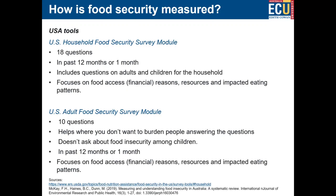It mainly looks at financial reasons — such as not being able to afford more food — and also at resources and impacted eating patterns of people within the household. If it's difficult for researchers to use all 18 questions, there's a shorter version: the Adult Food Security Survey Module, which is only 10 questions long, helping reduce burden on respondents.